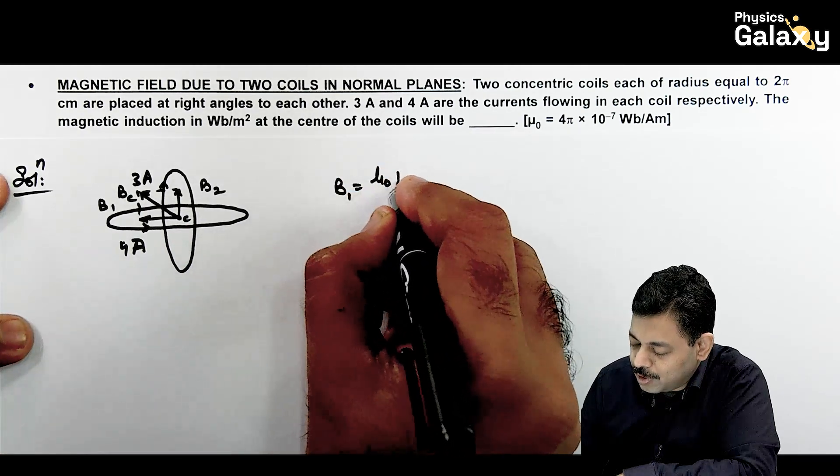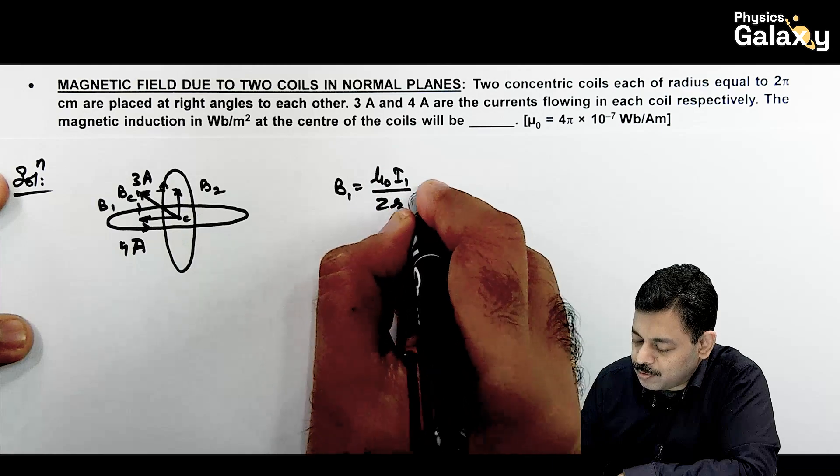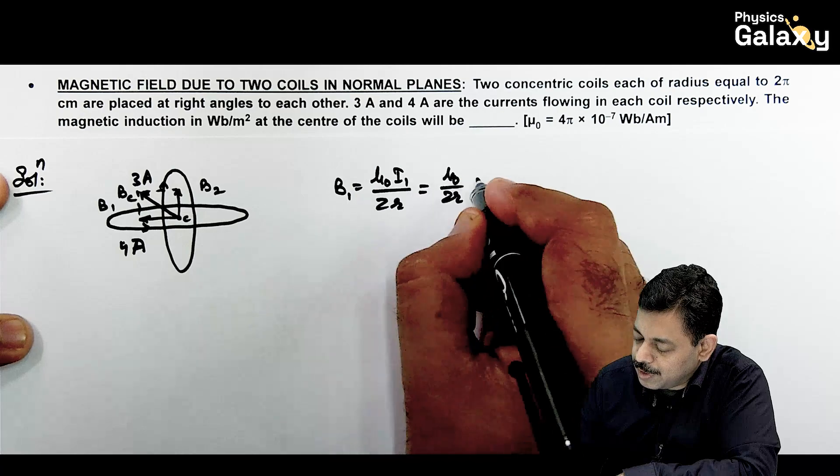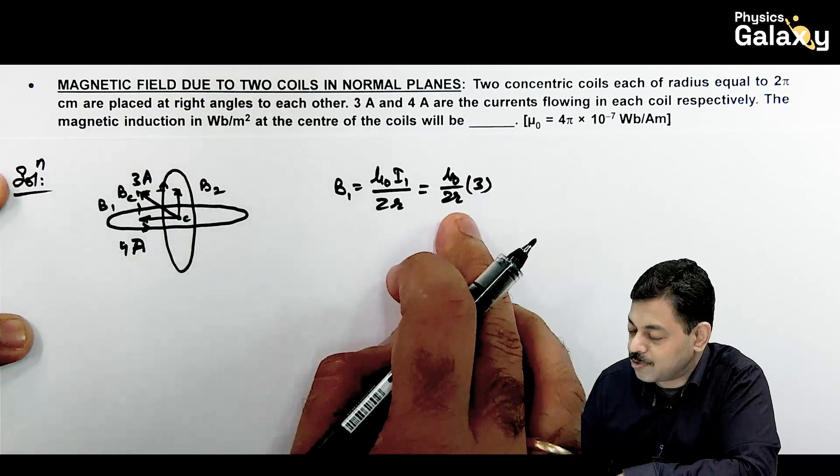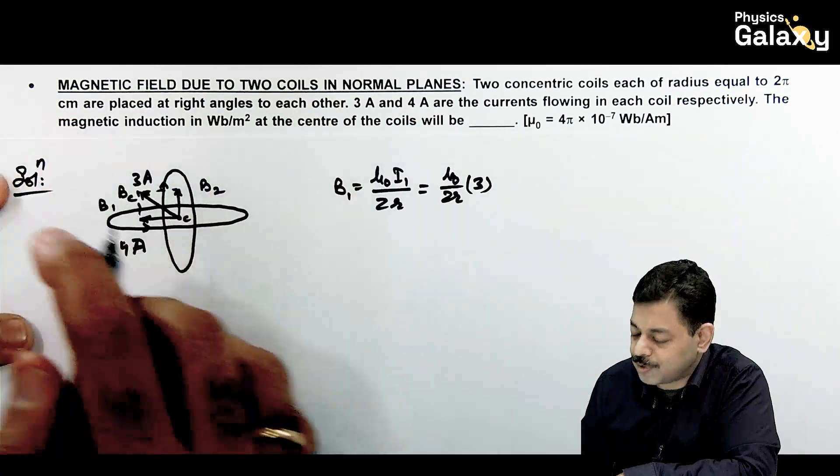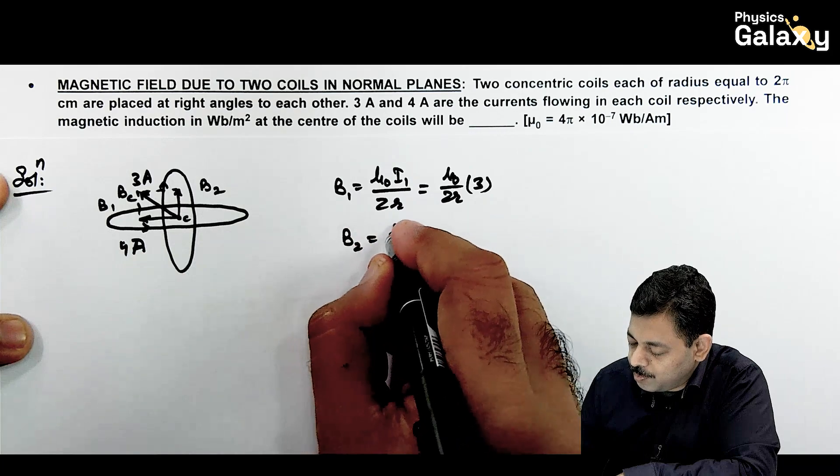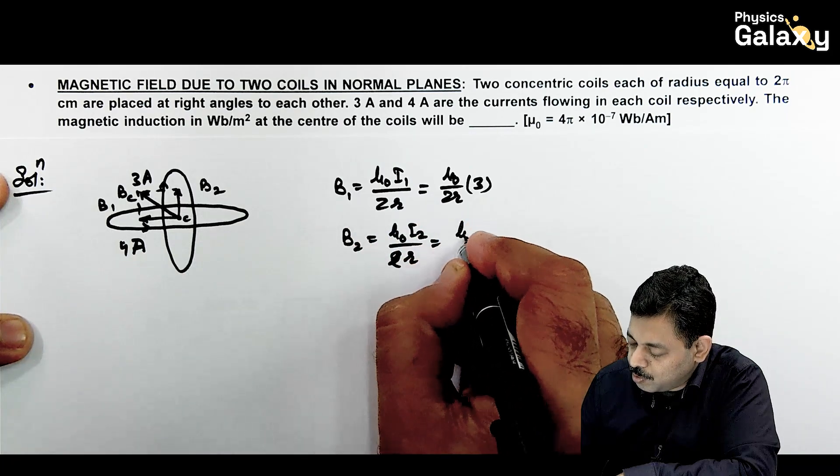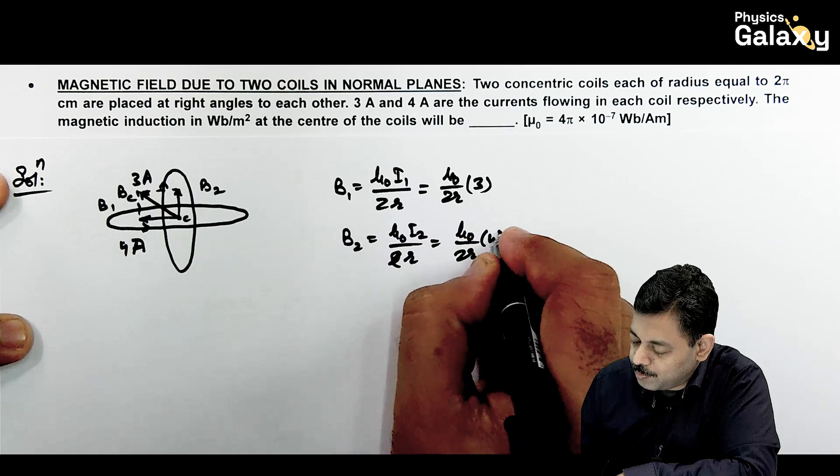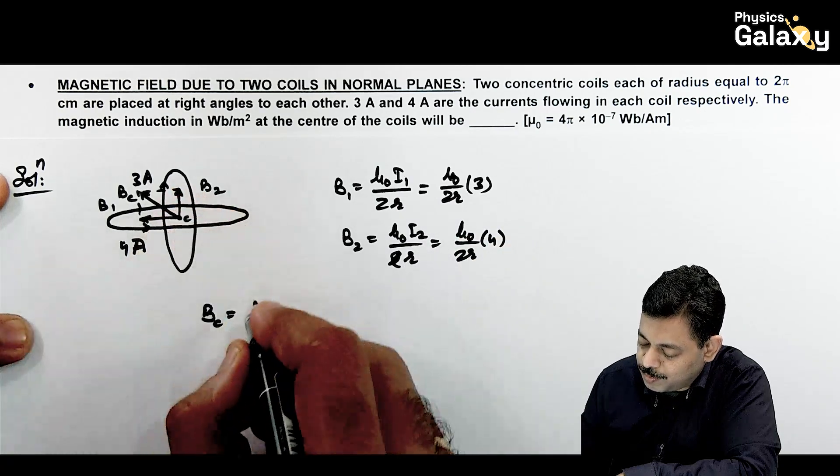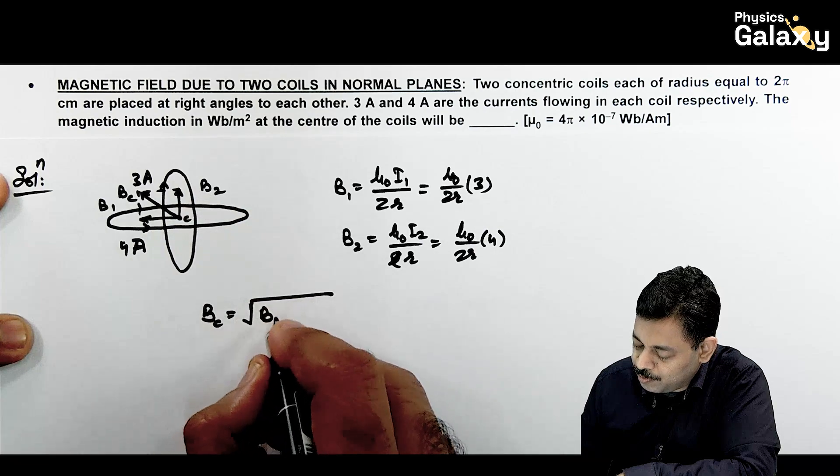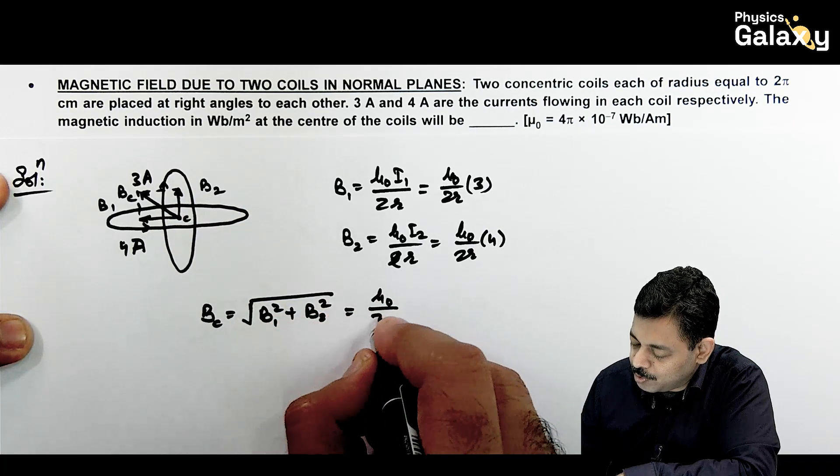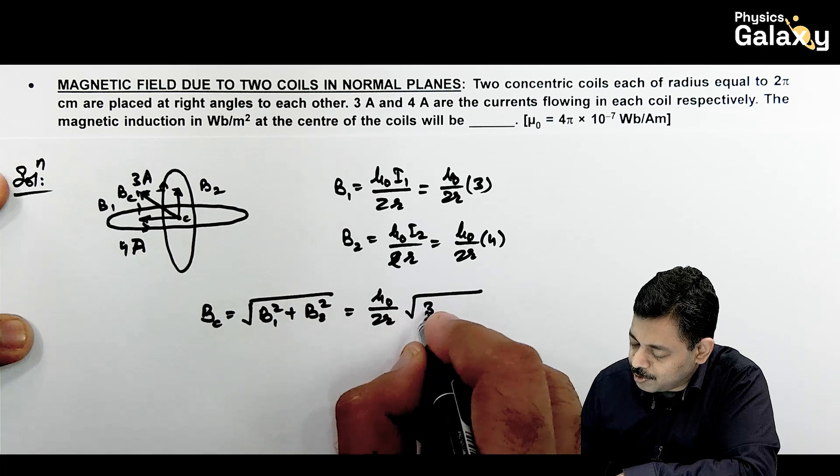If we calculate magnetic field, this is B1 which we can write as mu naught i1 divided by 2r. If you substitute values, this will be mu naught by 2r, current is 3 ampere. B2 will be mu naught i2 by 2r, so mu naught by 2r, this is 4 ampere. Magnetic field at center, as the two fields are perpendicular, will be root of B1 square plus B2 square, which equals mu naught upon 2r multiplied by root of 3 square plus 4 square.